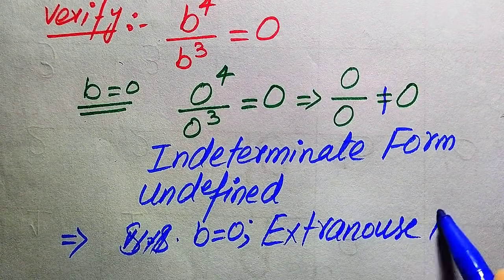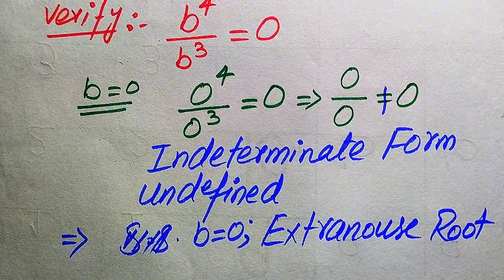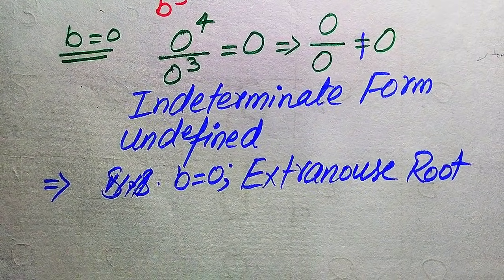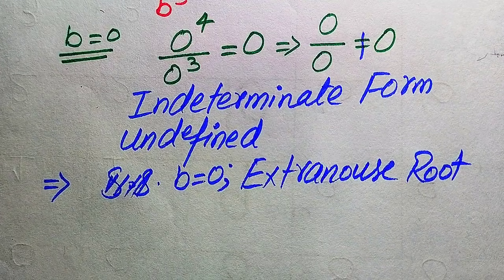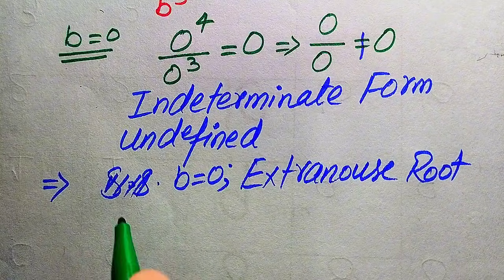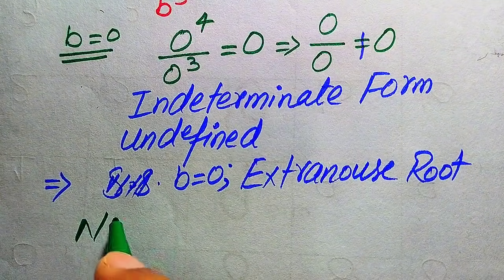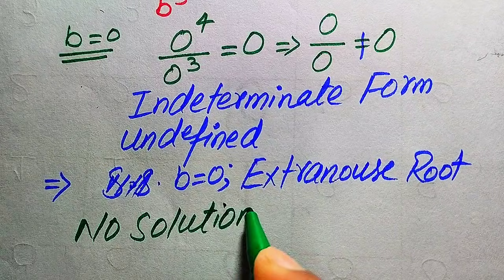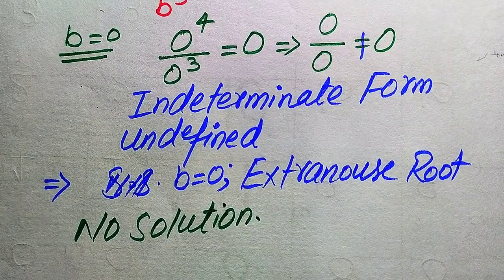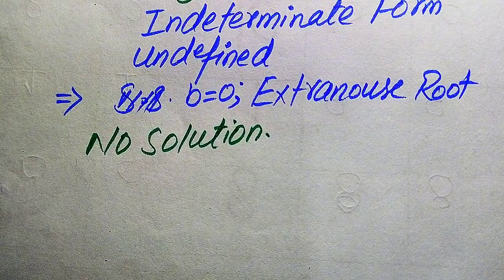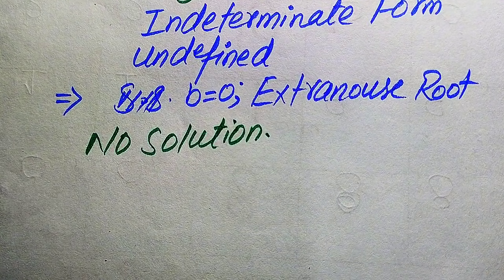Since we cannot get any other value of b that satisfies the given equation, we conclude that this equation has no solution. This is the final conclusion from the first method. Now we solve this problem using the second method.